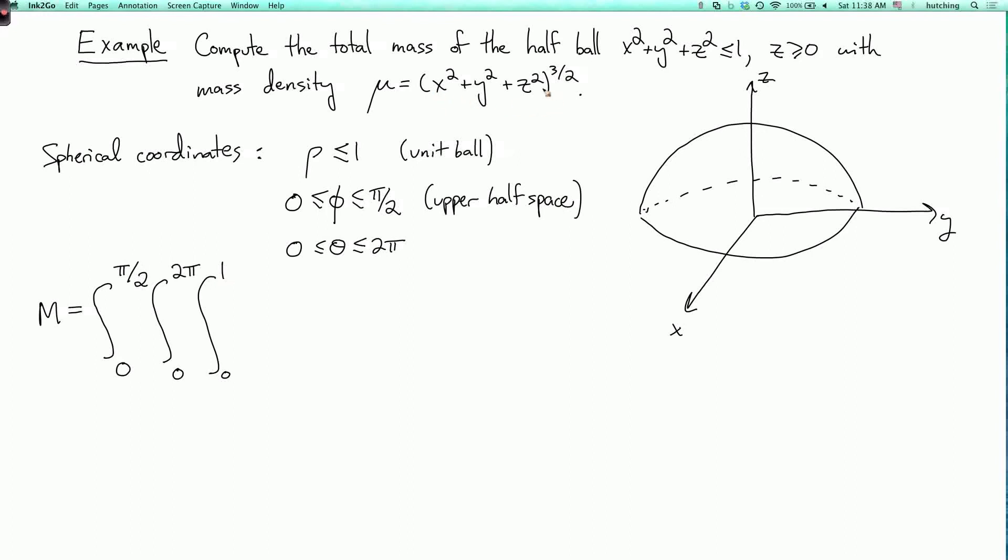Okay, now the mass density, this is rho squared to the 3 halves, so that's just rho cubed. And the magnification factor is rho squared sine phi. Then we have d rho, d theta, d phi.